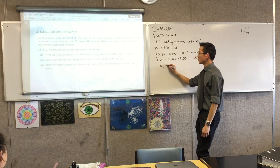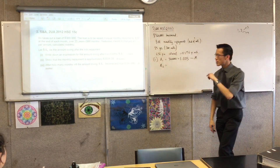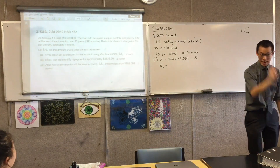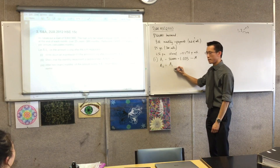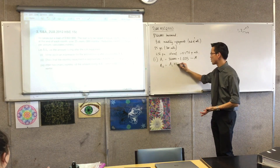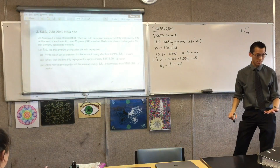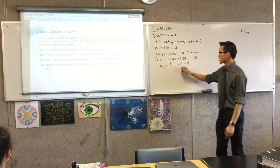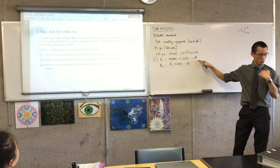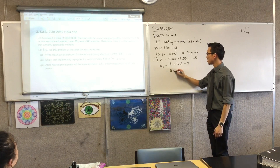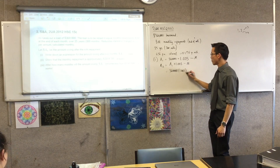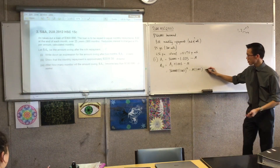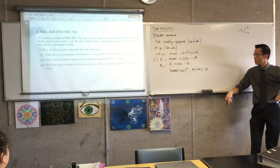Now for a_2: there's going to be a second repayment, but before the repayment there's always interest. So it's a_1 multiplied by 1.005, then subtract N. Expanding that out, every term gets another 1.005 — so we get 360,000 × 1.005² − N × 1.005 − N. That's two lots of interest on the original, one lot of interest on the first repayment, and then the most recent repayment.